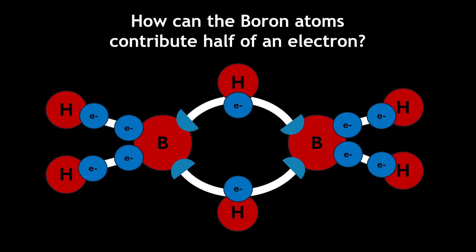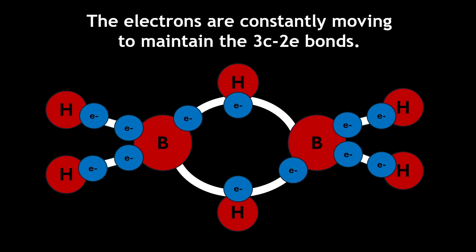But how can the boron atoms contribute half of an electron? In reality, the electron is not split in half between the two bonds, but instead, the electrons are constantly moving. This means that the molecule is shifting between these two structures in order to maintain the bonds.